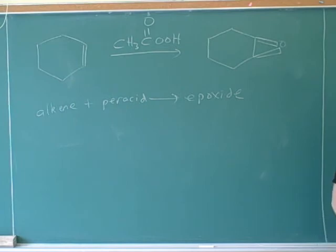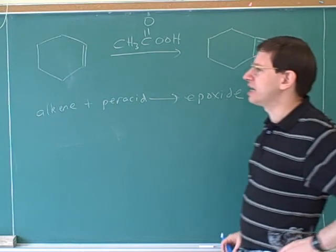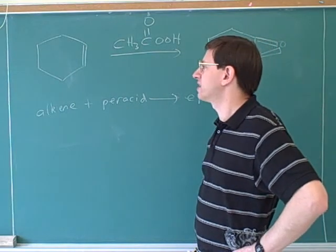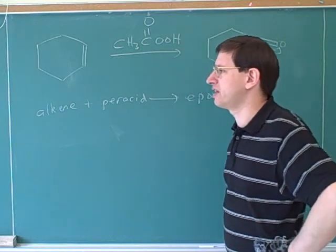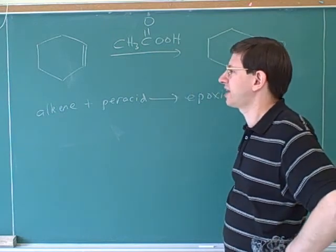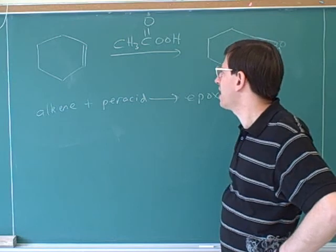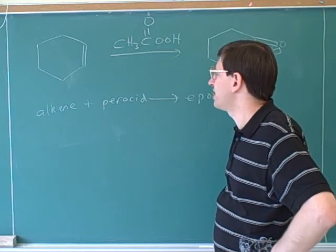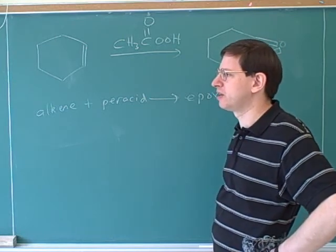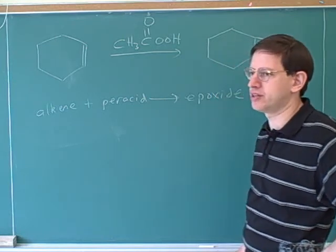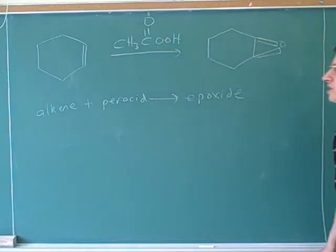Does it have to be a cycloalkene? It doesn't have to be cyclic. It turns out it's a little easier to draw the epoxide if you start with a cyclic alkene — that was a good question. In a moment we'll see how to make an epoxide from an acyclic alkene. It turns out to be a little trickier to draw the geometry, which is why we started with the cyclic case.